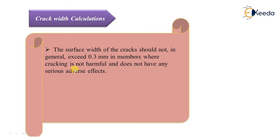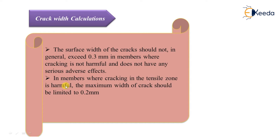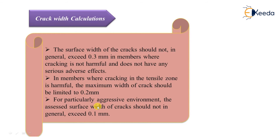If the member is one where cracking is not very harmful and there is no severely adverse effect, the permissible crack width is 0.3 mm. In members where cracking in the tensile zone is harmful, the maximum crack width should be limited to 0.2 mm — that is, where cracking in the tension zone is harmful, crack width should not exceed 0.2 mm. Similarly, for particularly aggressive environments such as the severe category, the assessed surface crack width should not be more than 0.1 mm.